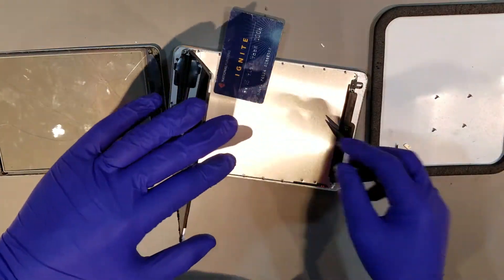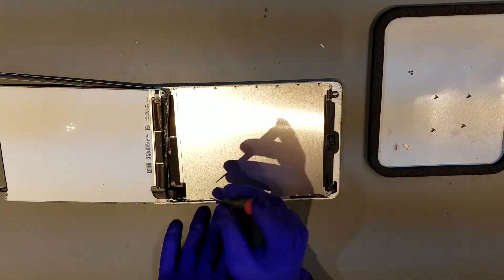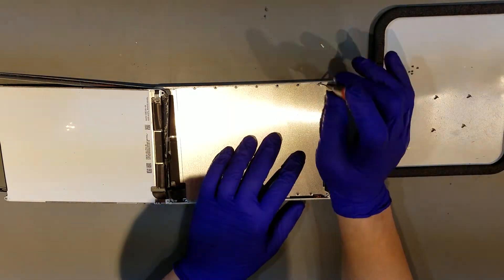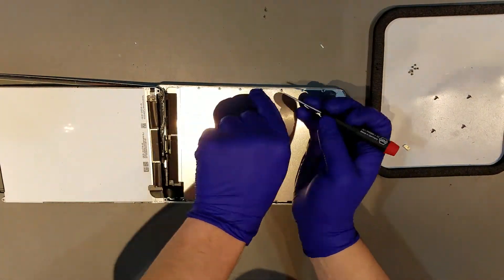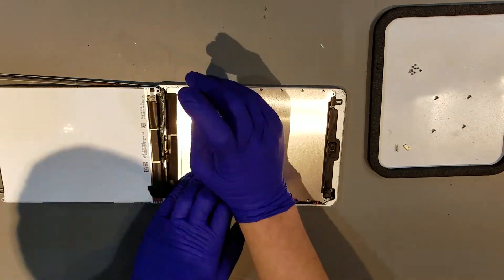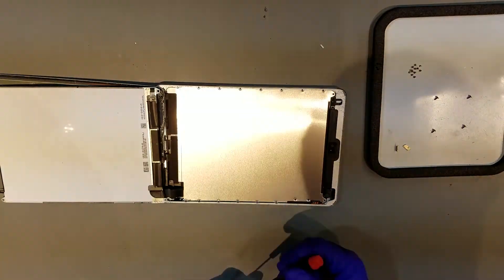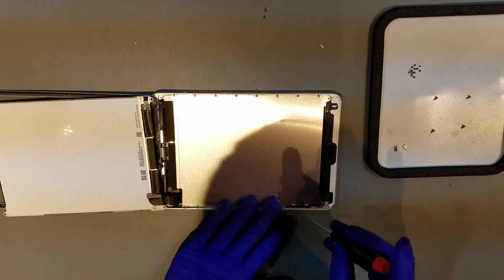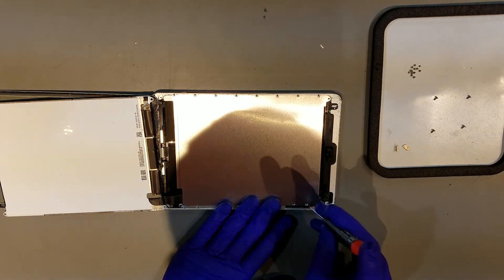Once it's been unadhered, it can be laid down on top of the glass. You'll then want to remove the fifteen total phillips screws that hold the shield on. You'll want to separate the two screws that are near the volume flex though, as they are longer than the rest of the screws.